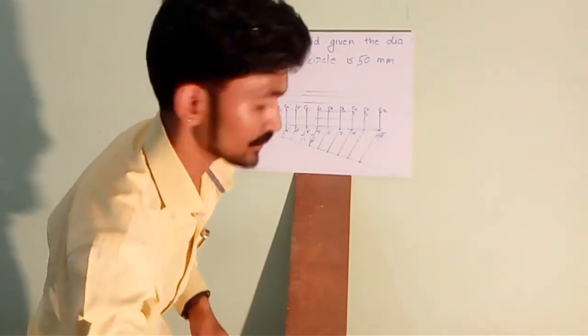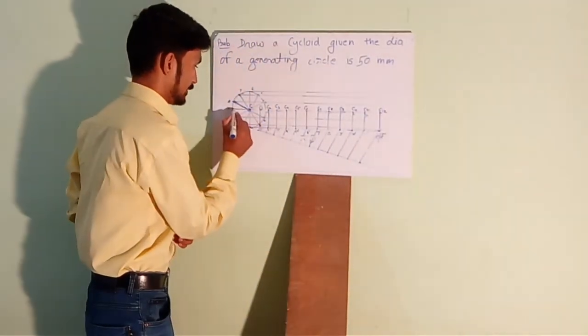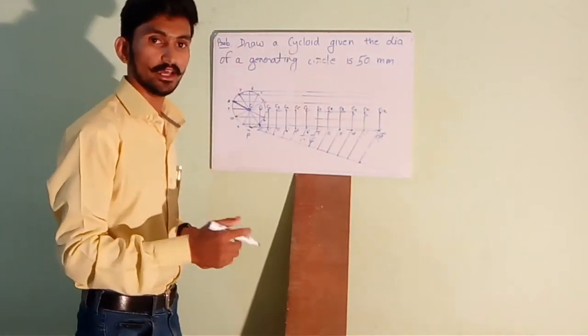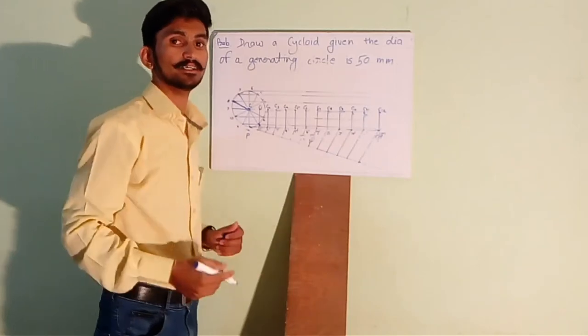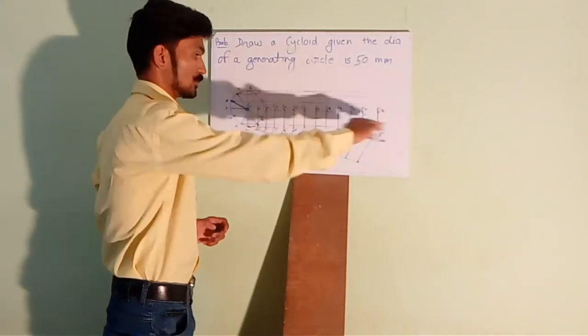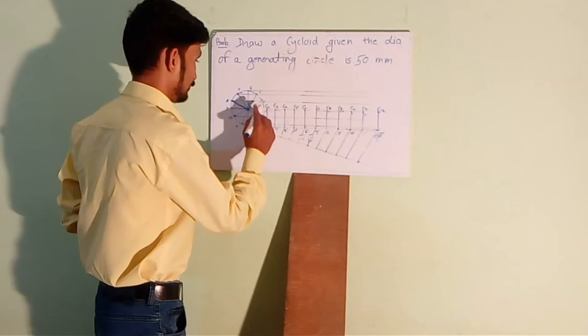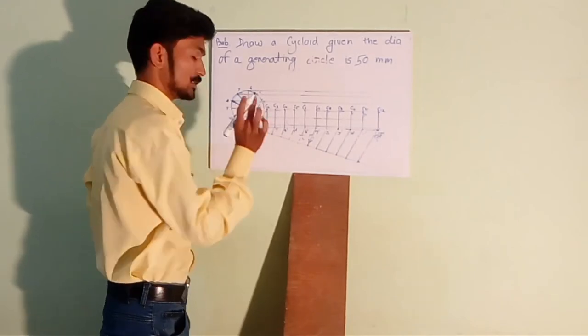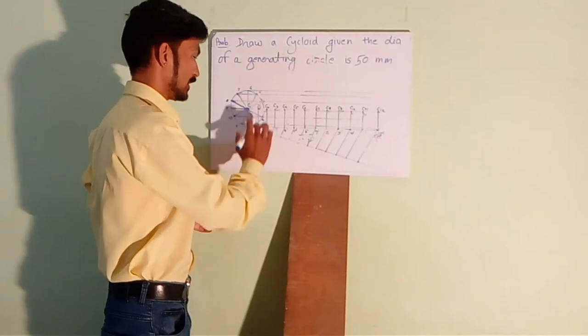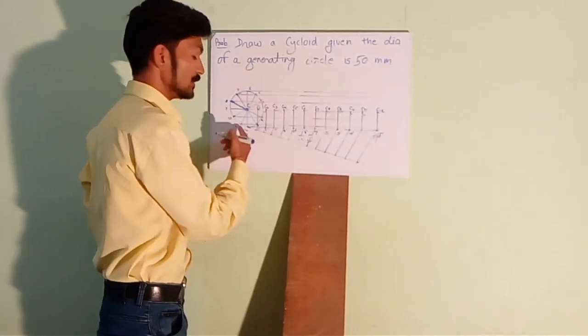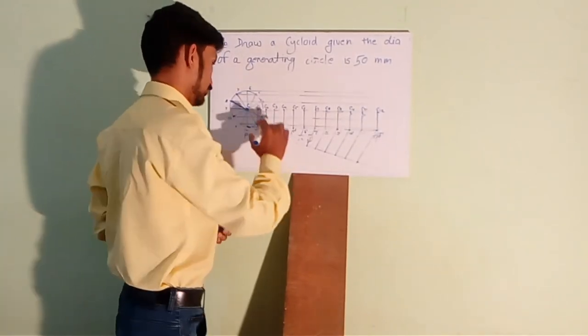Now next step is take radius of the circle as the radius and C1, C2, C3 as centers and cut arc on the consecutive lines. Like when firstly take this much the radius of the circle as radius and C1 as center and cut an arc on the line 1, line passing through 1.